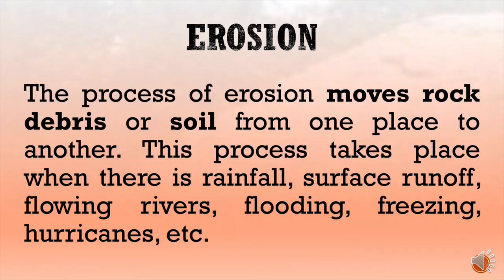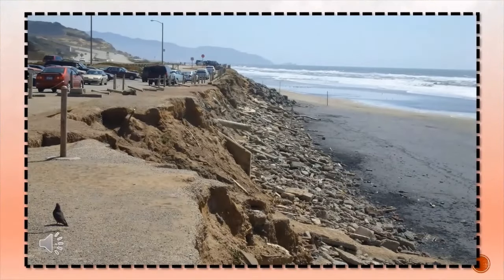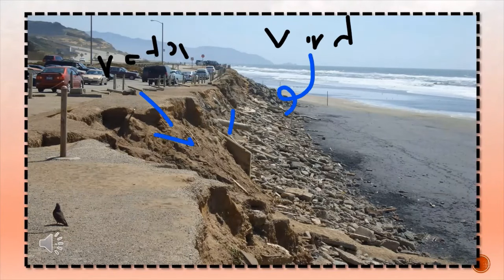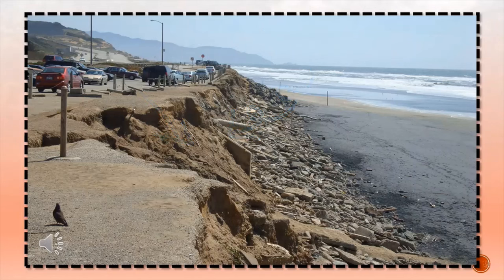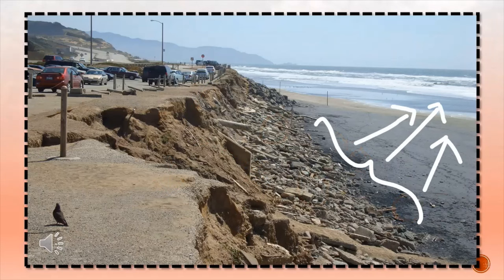The next exogenic process is erosion — the movement of rock, debris, or soil from one place to another. This takes place during rainfall, surface runoff, flowing rivers, flooding, freezing, hurricanes, etc. Because of agents like water and wind, the bonds between rocks and soil disintegrate, causing collapse. These rocks turn into fragments or sediments that are then deposited in the seabed or riverbed.